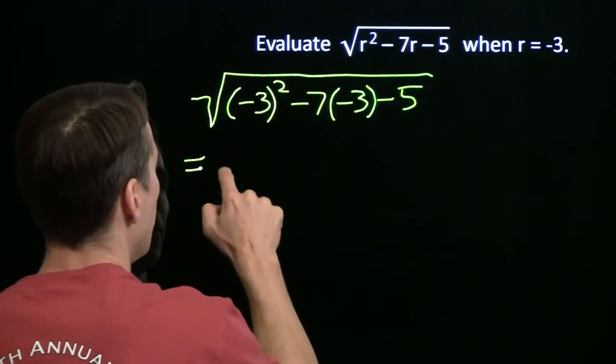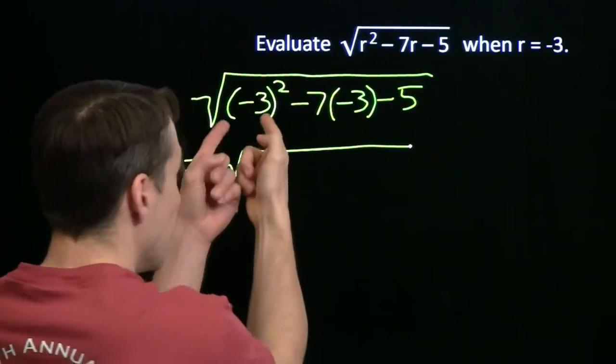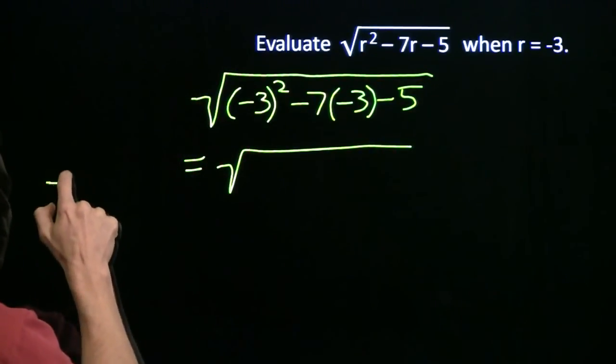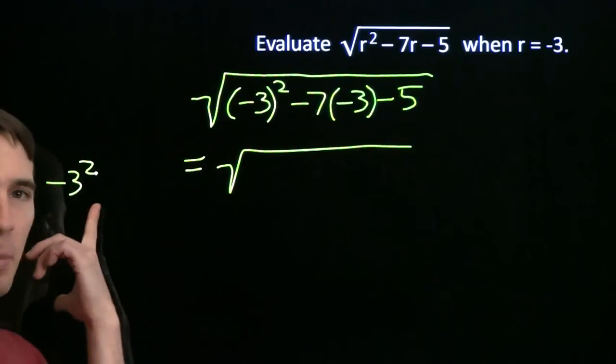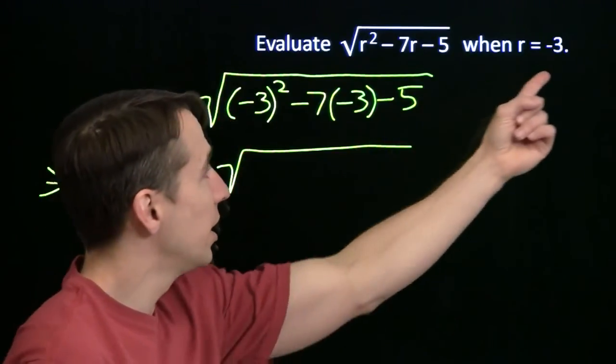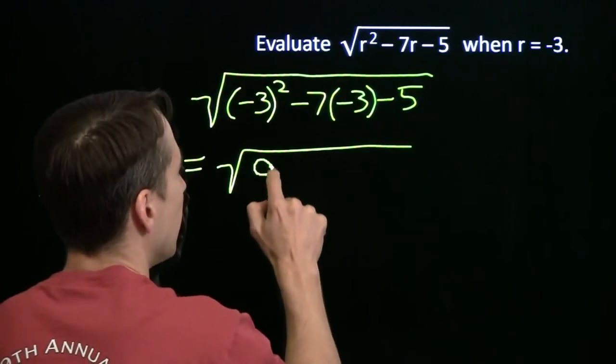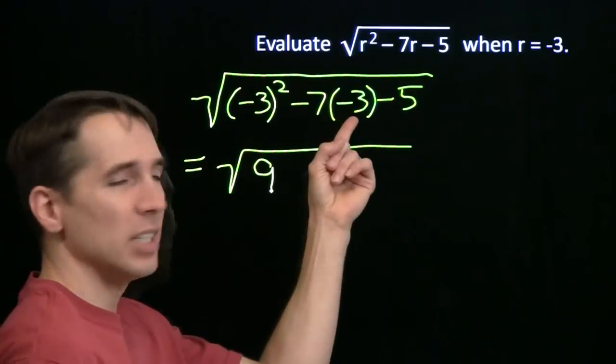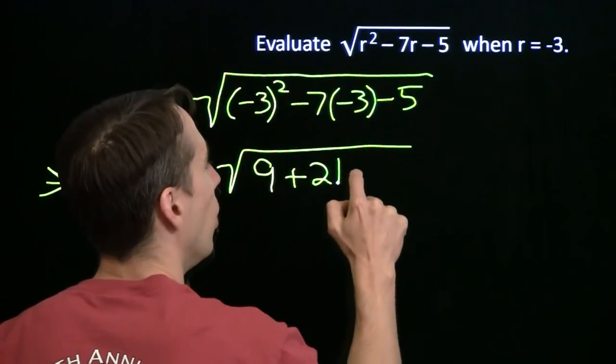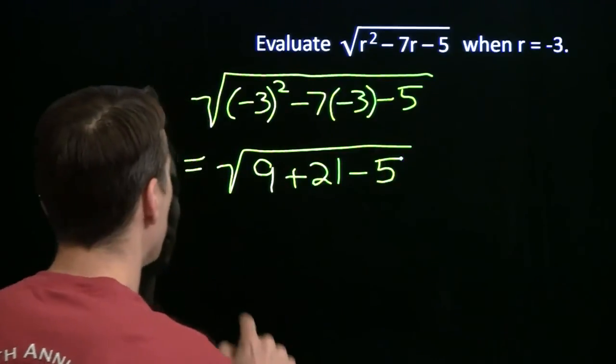So this is the same as I'm squaring negative 3. And again, this is why it's so important to put those parentheses in. If I had just written down minus 3 squared, I might think that's minus 9. That's not what we want here. We want to square the negative 3. That gives me 9. Then I have minus 7 times minus 3 plus 21 minus 5.